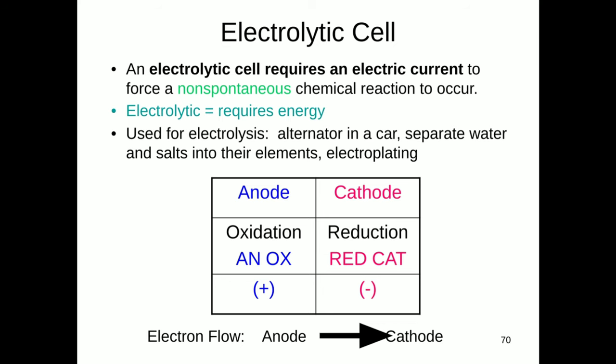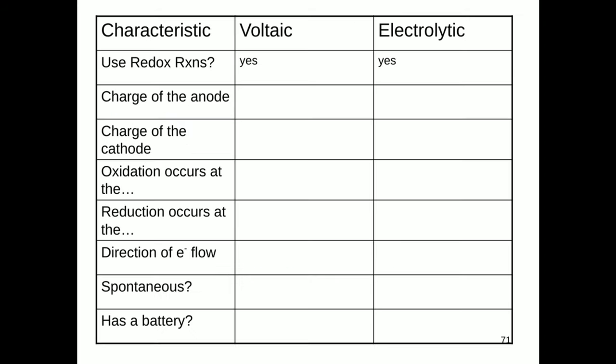As a review, an electrolytic cell requires an electric current to force the non-spontaneous chemical reaction to occur. In electrolytic cells, we use electricity to make chemicals. The biggest difference between an electrolytic cell and a voltaic cell is the sign, or the charge, of the electrodes. In all electrochemical cells, electrons flow from anode to cathode.